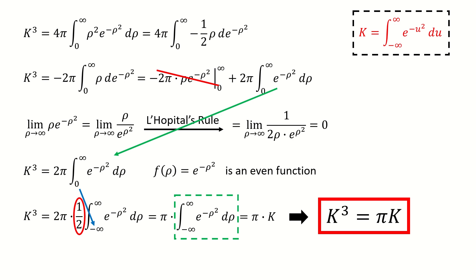You can see we never directly calculated this integral K. What we did so far is to derive a relation between the K cubed and K. Then from this relation, we can immediately solve K, which is equal to square root pi. This is the result for the Gaussian integral. This is an indirect method.